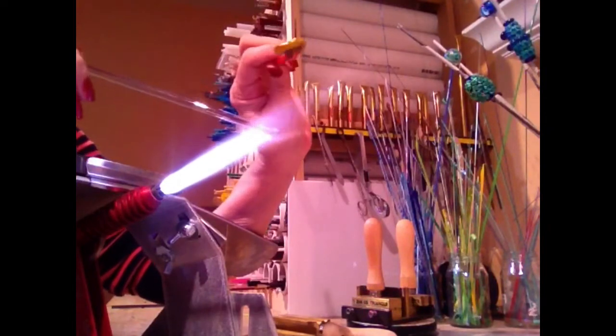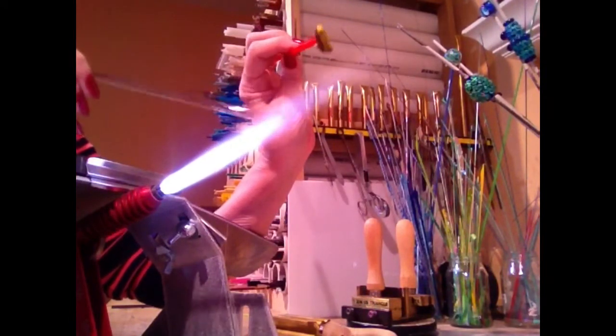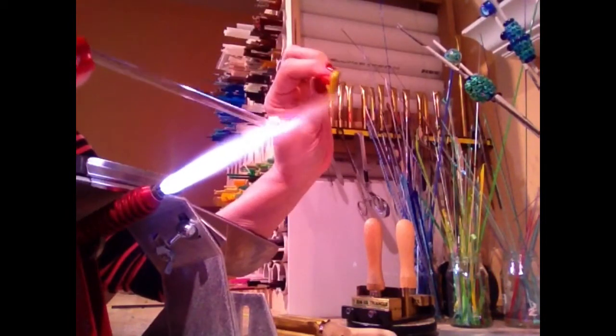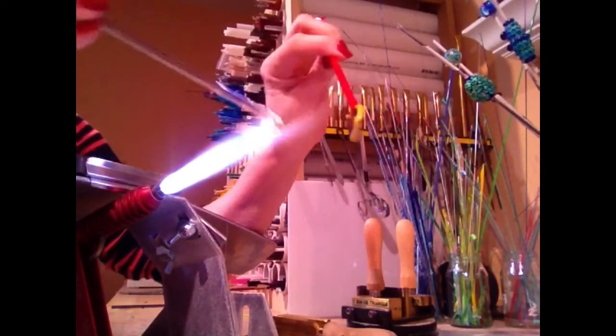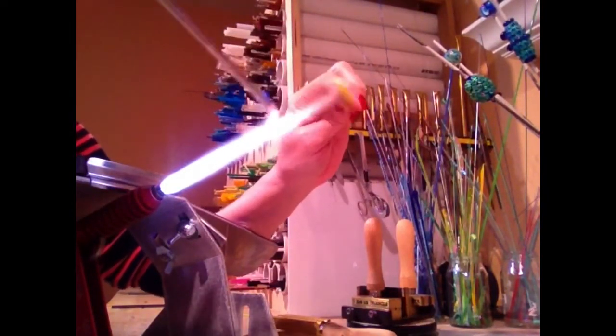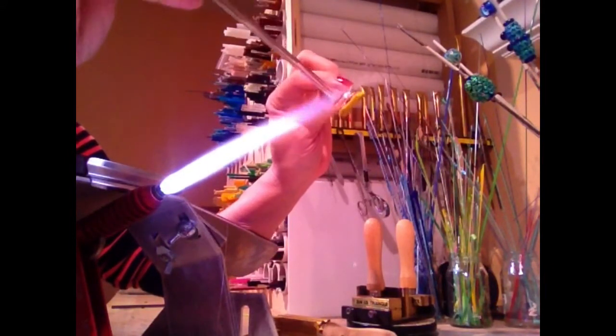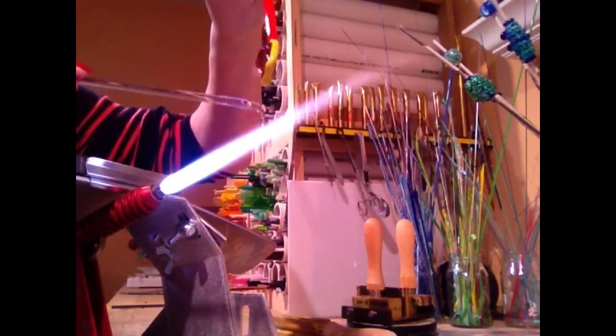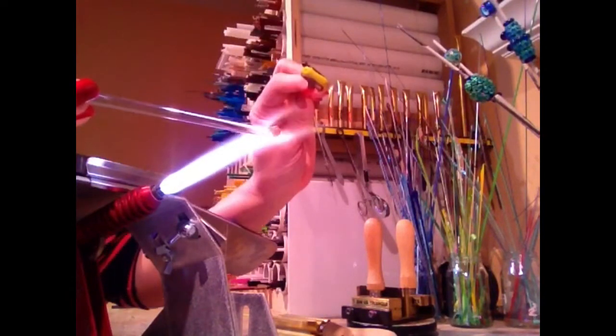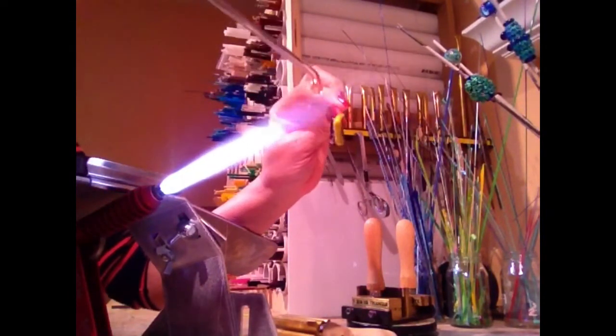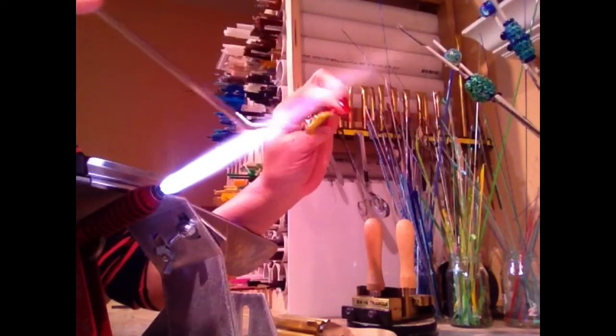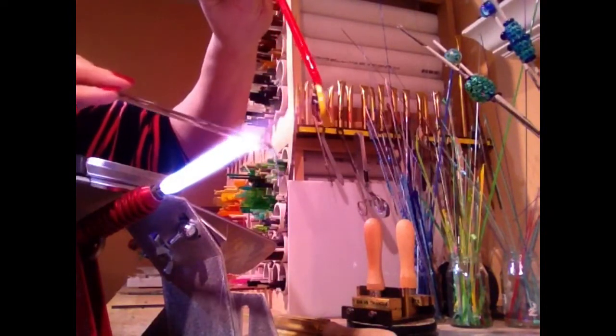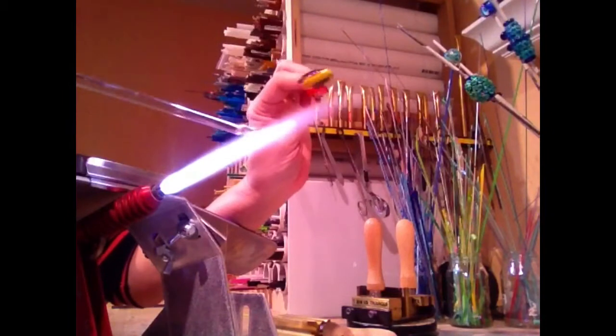So now all we need to do is cover it with clear. Got the clear warmed up. You can start to see it through a big old glob. Alright, here we go. So I'm just putting that big blob of clear right on top. And another big blob. I want kind of a mound on there so then it really shows up, the swirl shows up nicely in the clear.